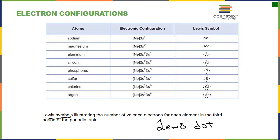We abandon the dots pretty quickly because they get messy, but to start, we put our dots at right angles around the symbol for the element. For carbon in group 4, we have 4 valence electrons placed at right angles. For nitrogen with 5 valence electrons, we go 1, 2, 3, 4, 5. It doesn't matter where you put the pair together and where you put the single dots, as long as they're at right angles around the element symbol.